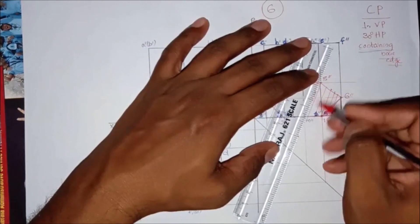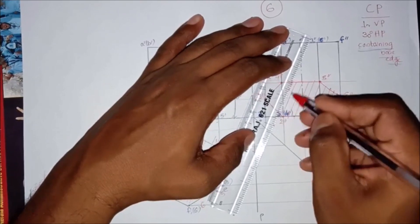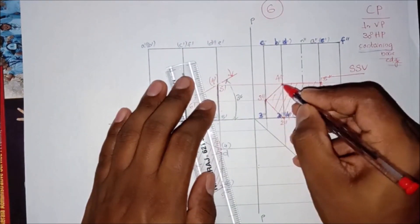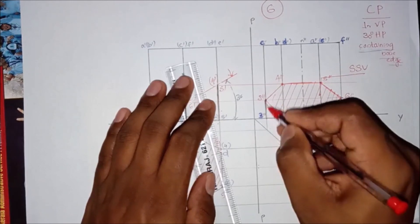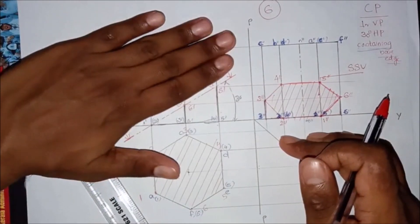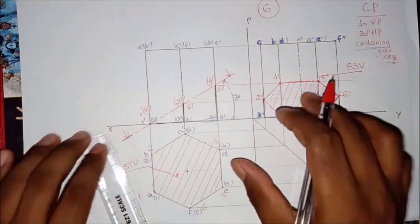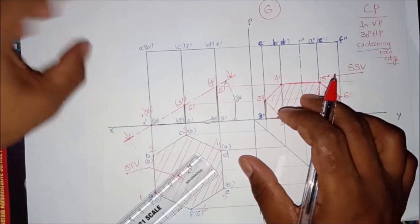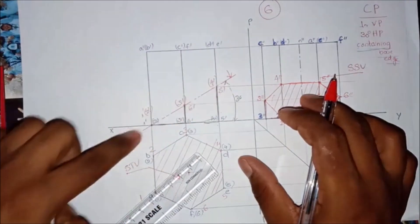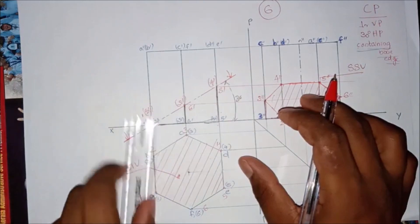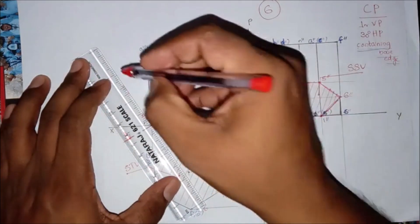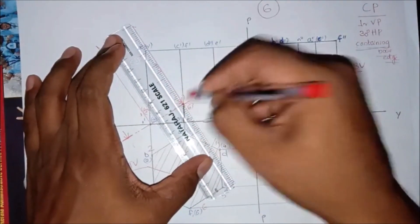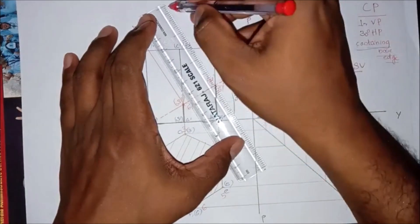Now for the sectional side view: this is the sectional side view. It is not a triangle — it is cut in this manner. This is the true shape. The baseline is not a parallel line. So 1 and 2 are in a perpendicular line, 3 and 6 are in a perpendicular line, and 4 and 5 are in a perpendicular line.